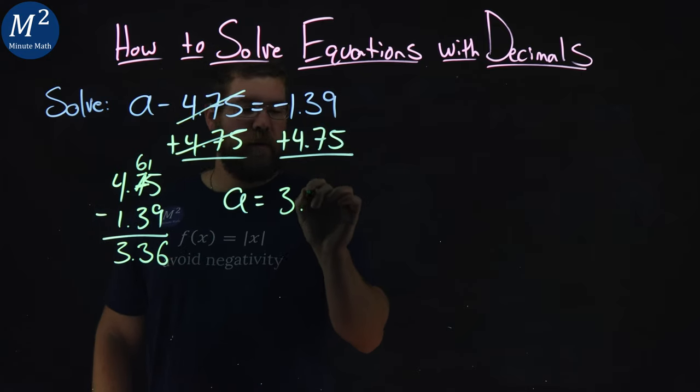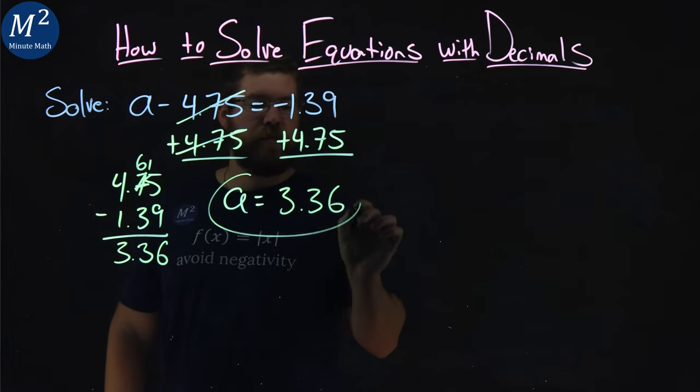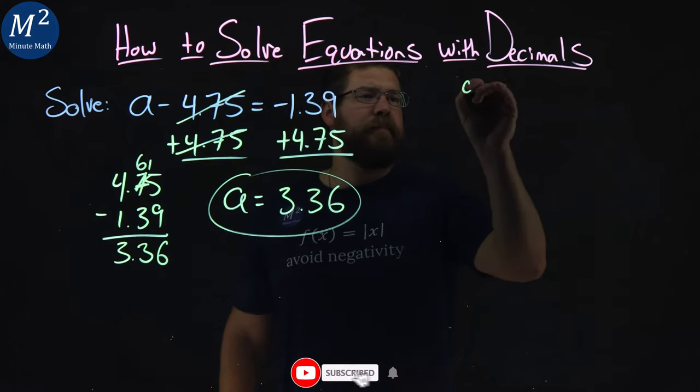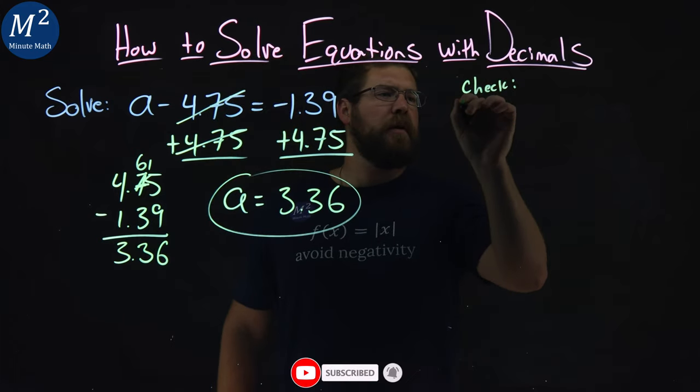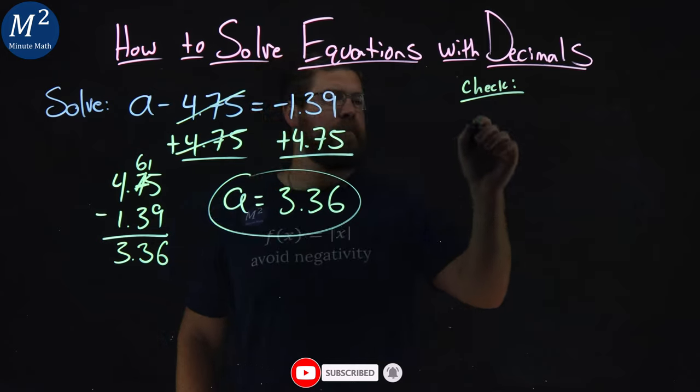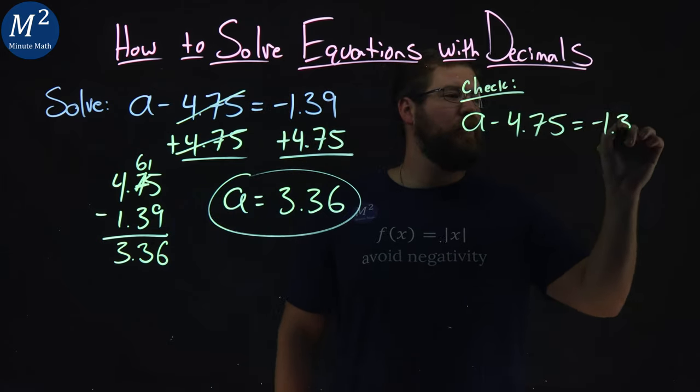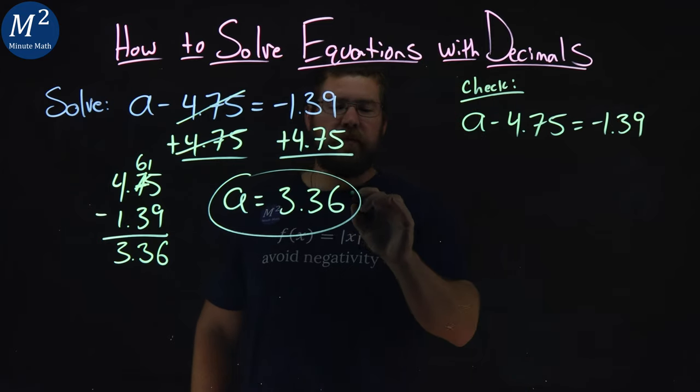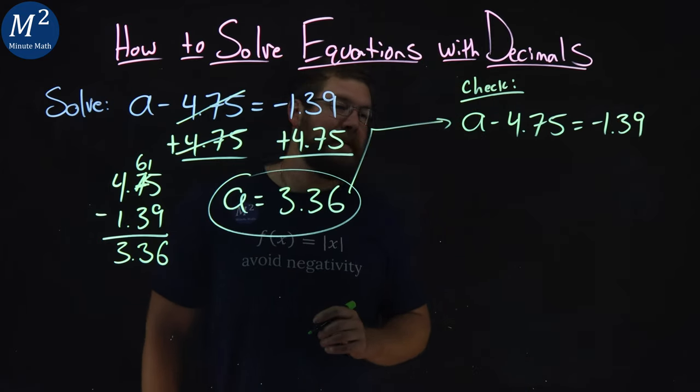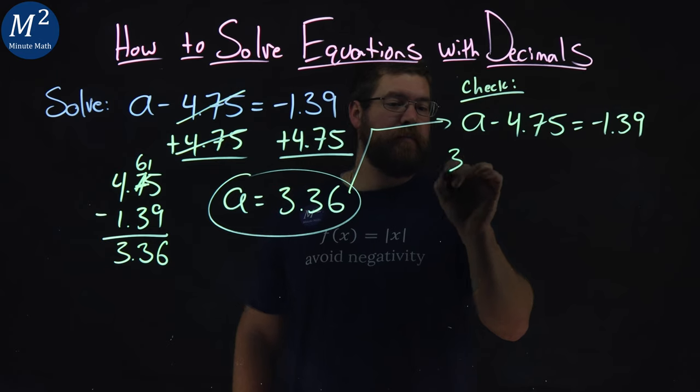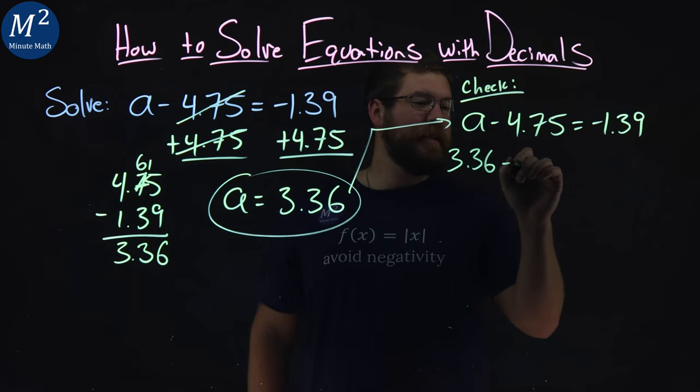So, A here is 3.36. Now, we've got to check that. To check that, I rewrite my equation. A minus 4.75 equals negative 1.39. We're going to substitute this 3.36 in for A and see if we can simplify.